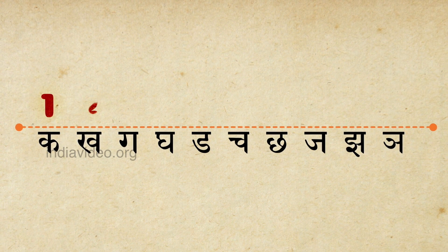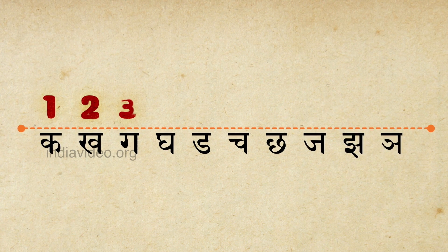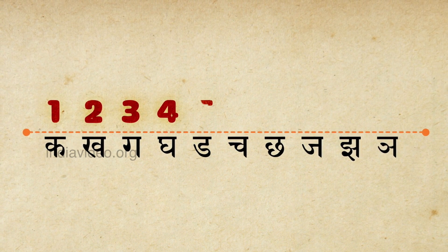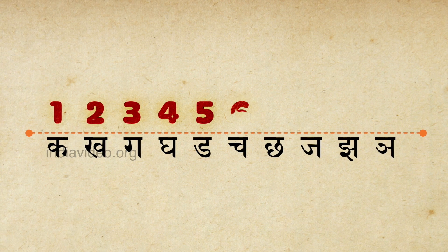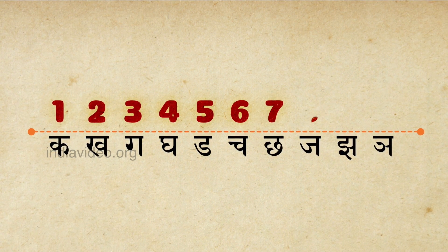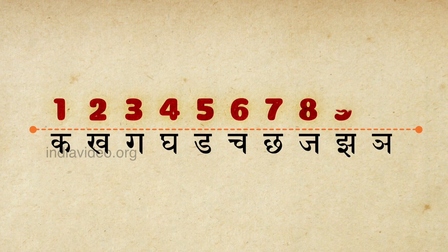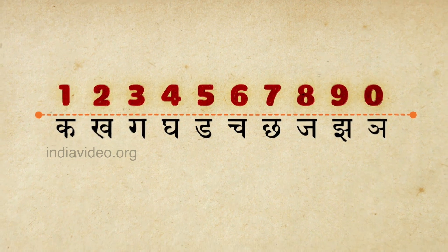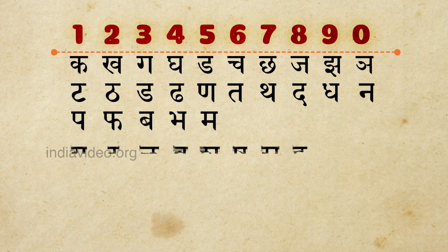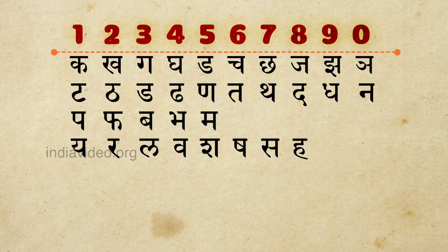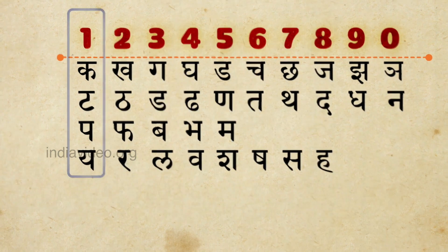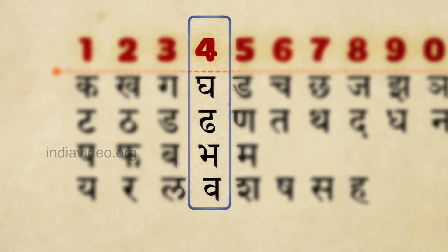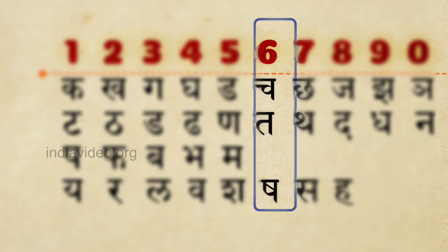The first consonant Ka is assigned to the numerical value 1, the second consonant Ka is assigned to the value 2, and so on, till one gets to Jh which is represented by 9, and the next by 0. The numbers are then assigned to the next set of 10 consonants in a similar manner. In this scheme, we therefore end up having multiple alphabets representing the same number.